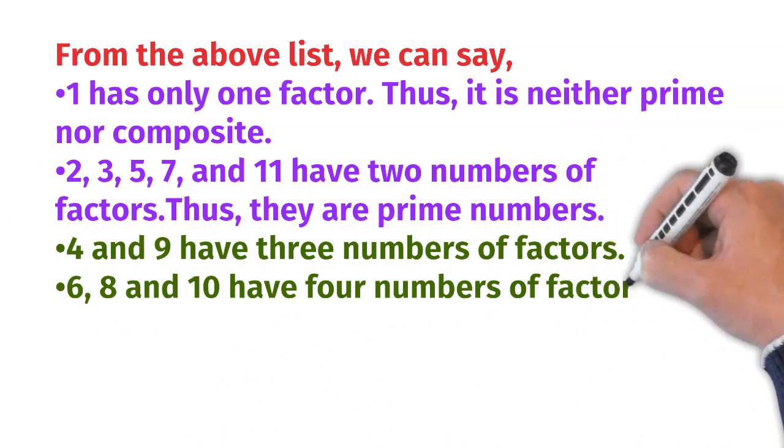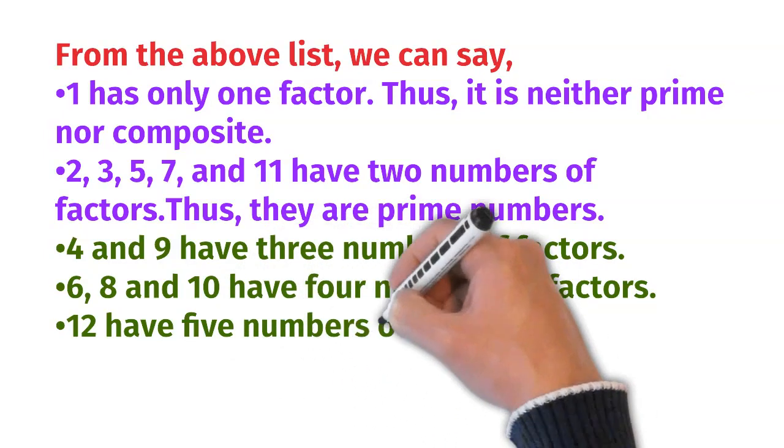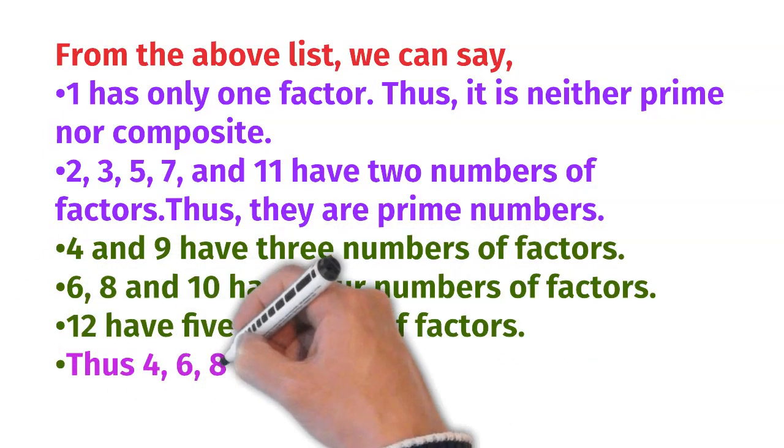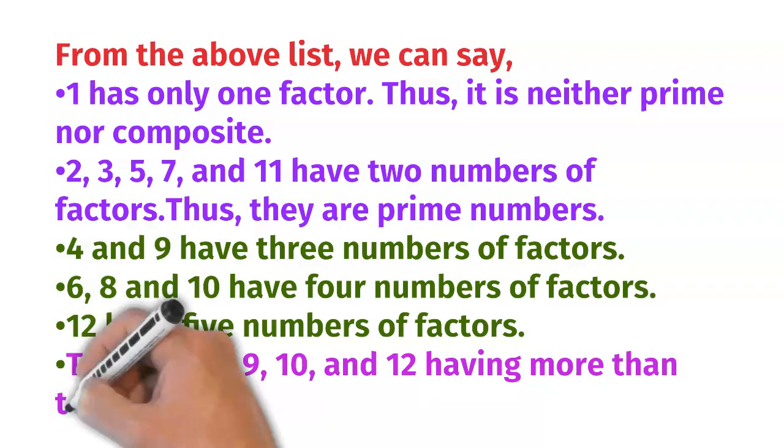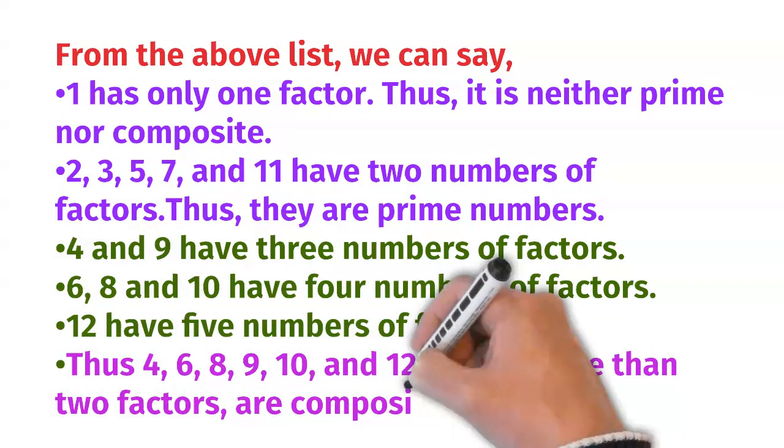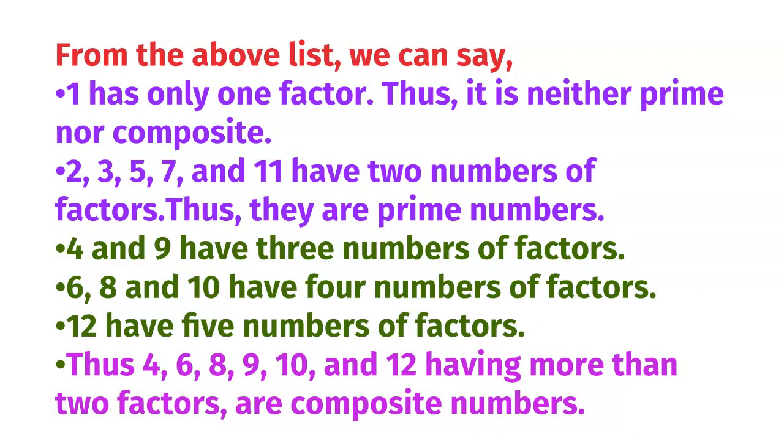4 and 9 have 3 numbers of factors, 6, 8, 10 have 4 numbers of factors, 12 has 5 numbers of factors. Thus 4, 6, 8, 9, 10 and 12 having more than two factors are composite numbers.